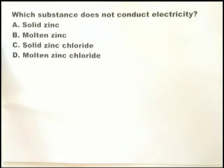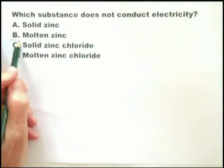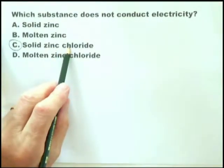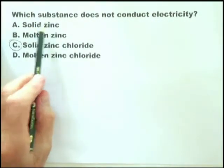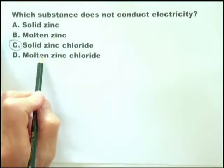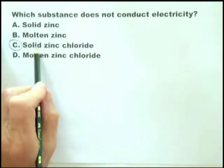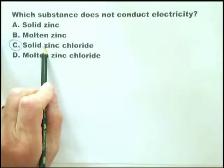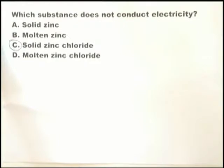As soon as you see this question, you should know the answer immediately: solid zinc chloride does not conduct electricity. The reason it doesn't is because the zinc ions and the chloride ions cannot move when it is solid. Solid zinc conducts electricity. Molten zinc conducts electricity. Molten zinc chloride conducts electricity because the ions can move. In solid zinc chloride, yes, there are ions, but they cannot move — therefore, solid zinc chloride does not conduct electricity. This is a question you have to be able to answer in five seconds in order to save time for other questions.